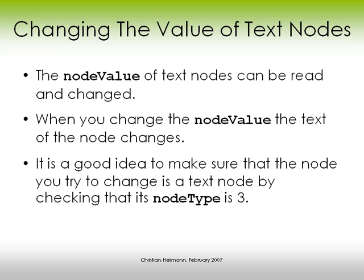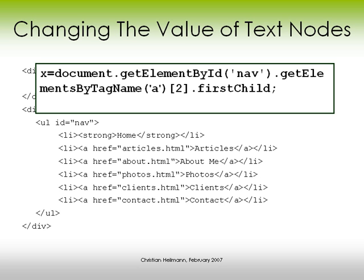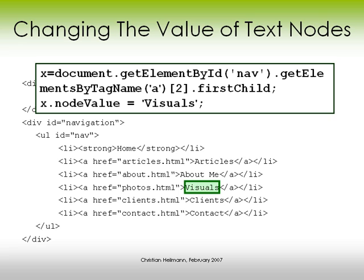The nodeValue of text nodes can be read and changed, and when you change it, it updates the text both in the HTML and in the display. It's a good idea to make sure the node you're trying to change is a text node by checking that nodeType is 3, otherwise you'll cause an error. In our case, we go to the third link in the document — our 'photos' item — and change the nodeValue to 'visuals', because we might not only want to upload photos.